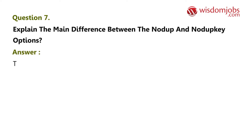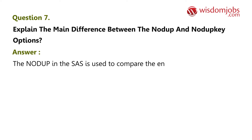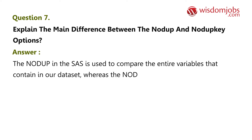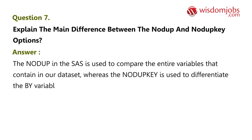Question 7: Explain the main difference between the NODUP and NODUPKEY options. Answer: The NODUP option in SAS is used to compare all the variables contained in the data set, whereas the NODUPKEY option is used to differentiate the BY variables.